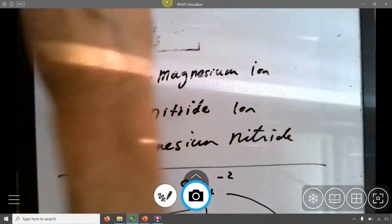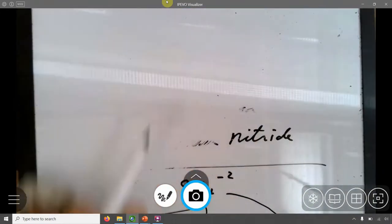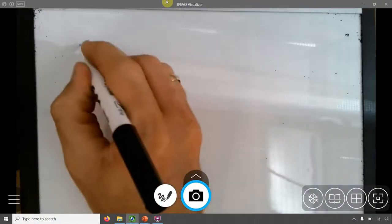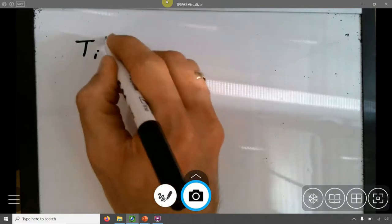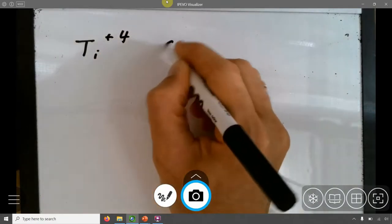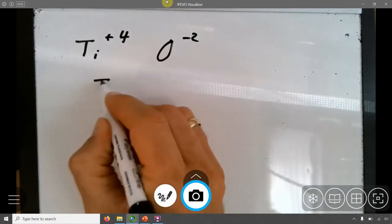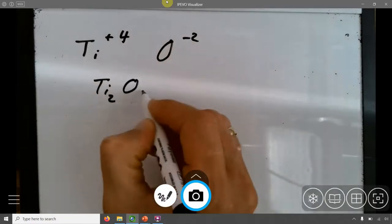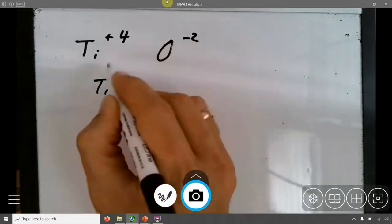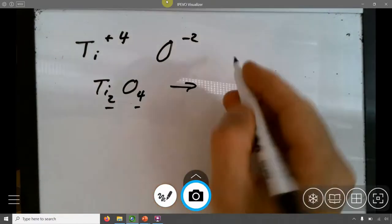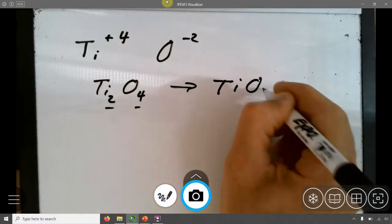Let's look at another example. I have Ti plus four and O minus two. To write this together, again, take the absolute value. You would get Ti2O4. The four goes here. The two goes here. But we have to reduce that. So reduce that to be TiO2. Smallest possible subscript, unless noted otherwise.